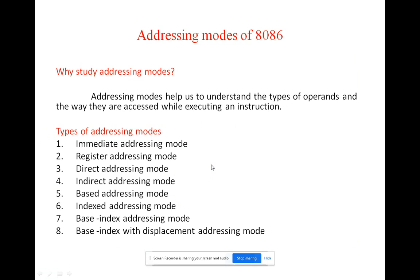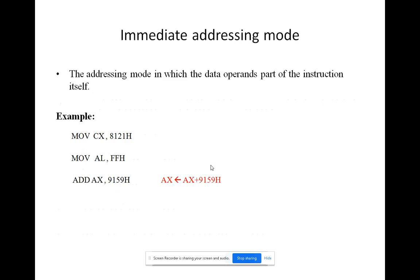The study of 8086 addressing modes helps us understand how operands are used in instructions during execution. The types of addressing modes available are: immediate addressing mode, register addressing mode, direct addressing mode, indirect addressing mode, based addressing mode, index addressing mode, and based index addressing mode.